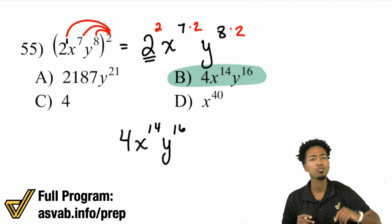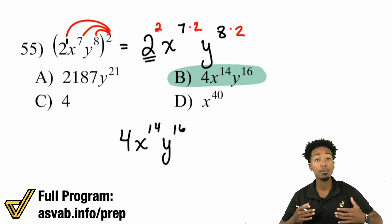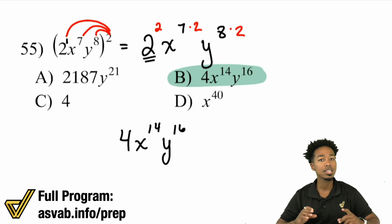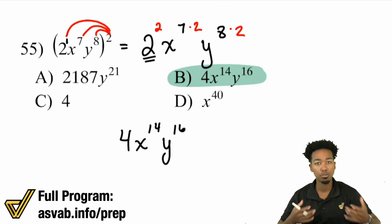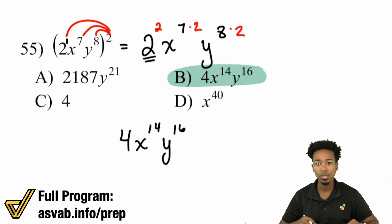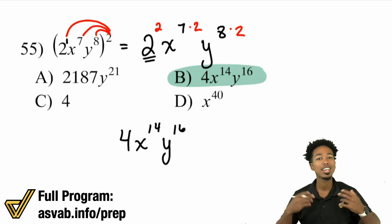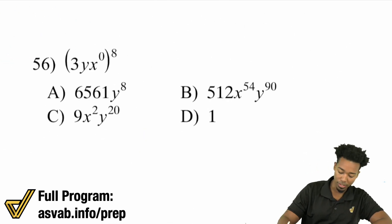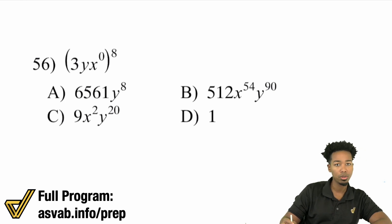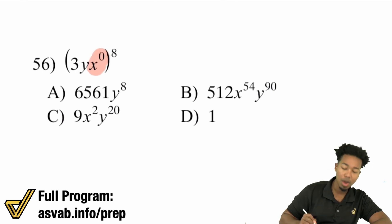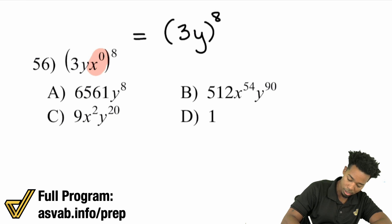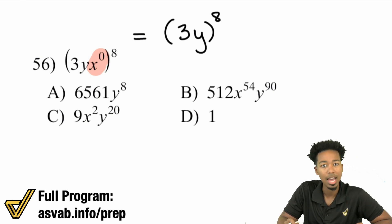Let's keep it going. When we're done going through all these techniques, you'll see guided practice videos for all types of mixtures — product and quotient laws, product and powers, quotient and powers. Now problem number 56: 3y times x to the power of 0, all to the power of 8. First, you can simplify before you begin — anything to the power of 0 is just going to be 1. So you can write this as 3y all to the power of 8.